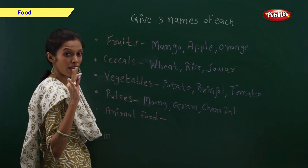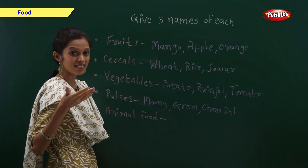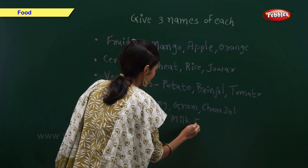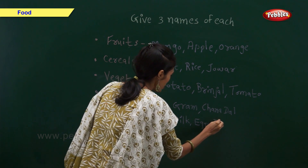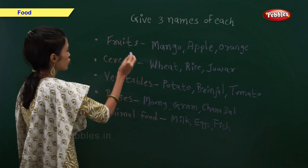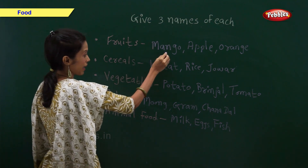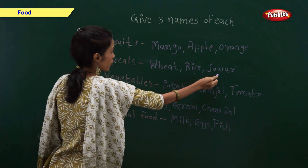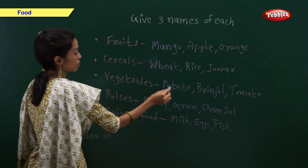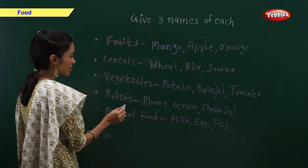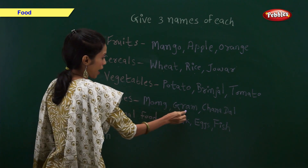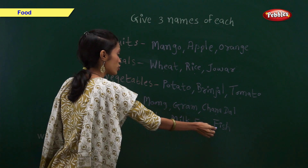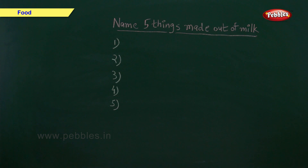Now give three examples of animal food: milk, eggs, and fish. So, three examples of fruits are mango, apple, and orange. Three examples of cereals are wheat, rice, and jowar. Three examples of vegetables are potato, brinjal, and tomato. Three examples of pulses are moong, gram, and chana dal. Three examples of animal food are milk, eggs, and fish. Now you have to name five things made from milk.